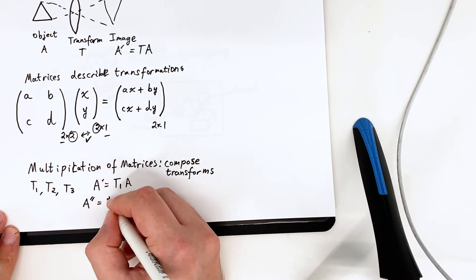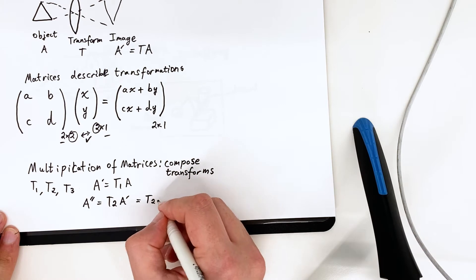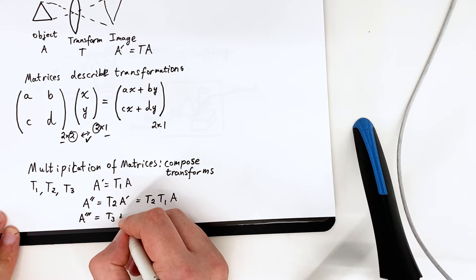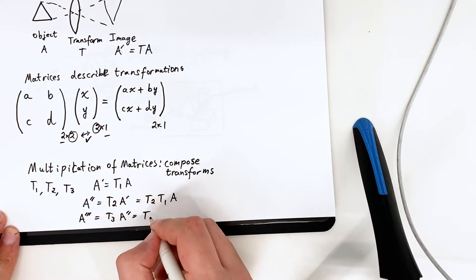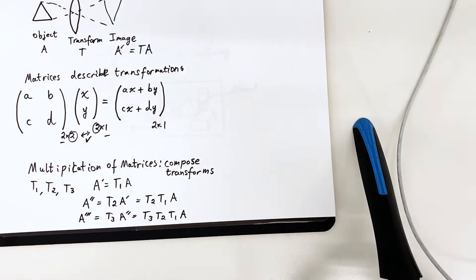And we can see that here with a triple dash as well. So the order of multiplication of matrices matters, new transformations are stacked onto the left. So it's kind of maybe the opposite of what you would expect.